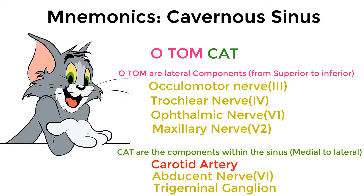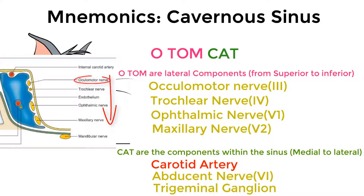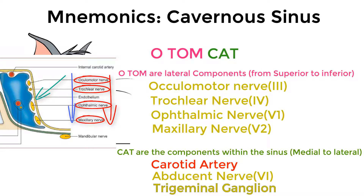So to summarize: O TOM means oculomotor nerve, trochlear nerve, ophthalmic nerve, and maxillary nerve — going from superior to inferior on the lateral side of the cavernous sinus. CAT means carotid artery, abducens nerve, and trigeminal ganglion — present within the sinus, going from the middle to the lateral side. The trigeminal ganglion is not shown in the diagram but is present in this location.